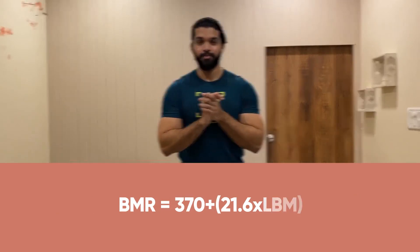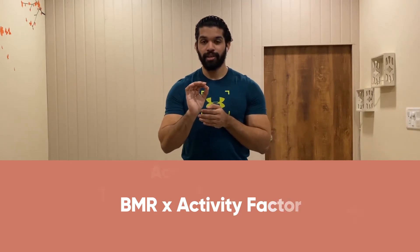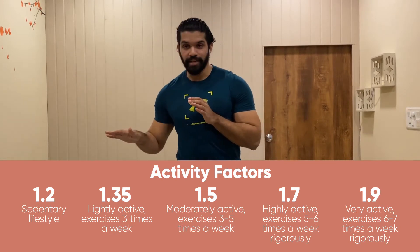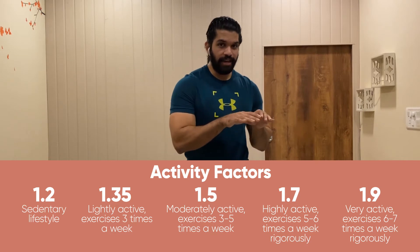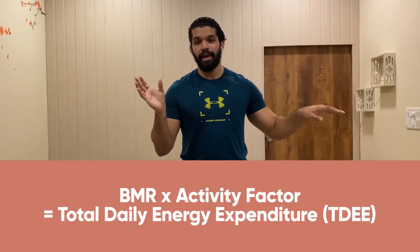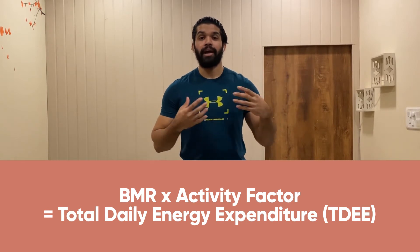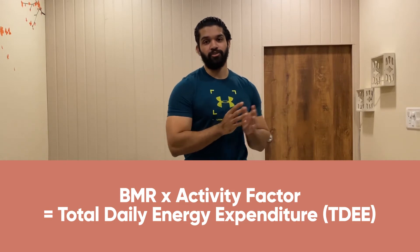Calculate your BMR with the formula below. Now multiply your BMR with either of these activity factors based on being sedentary, lightly active, moderately active, highly active, or very active. For example, I am very active so I will multiply my BMR with 1.9, and the answer would be my TDEE — that is Total Daily Energy Expenditure.